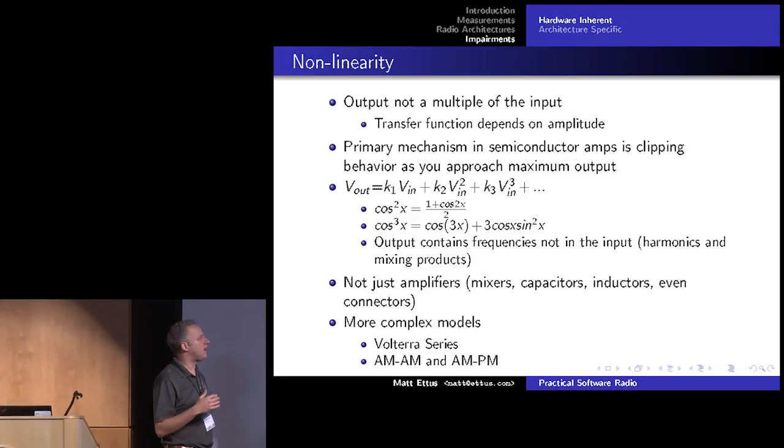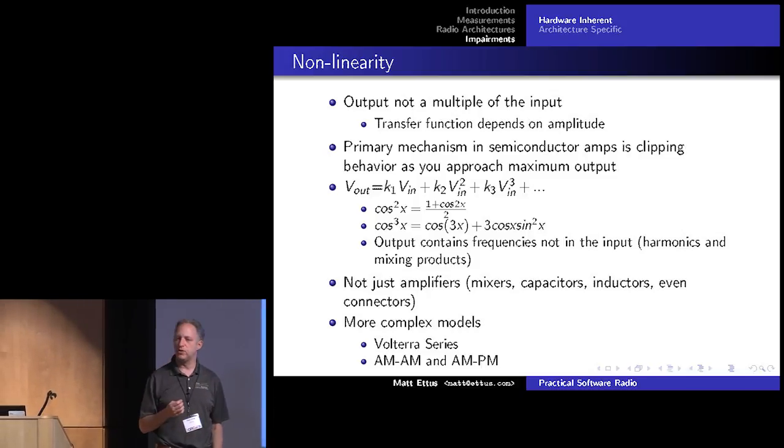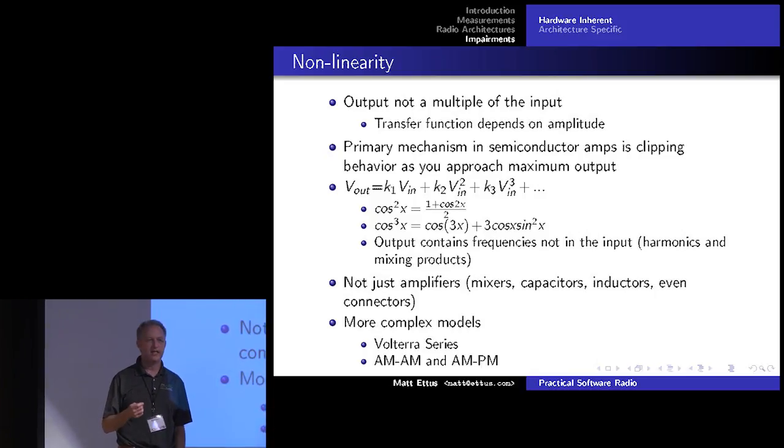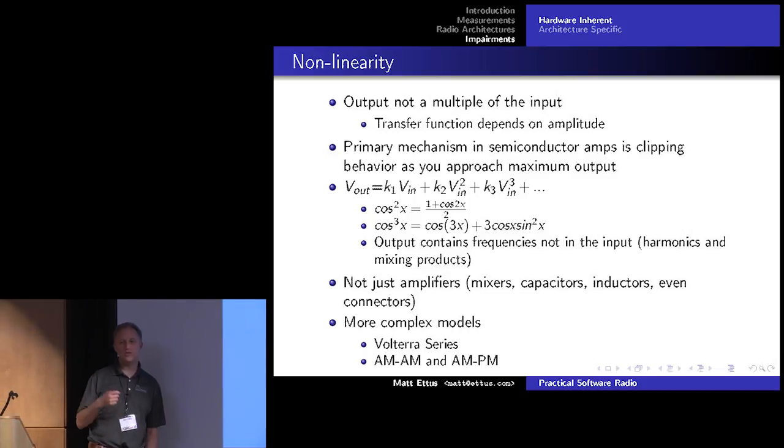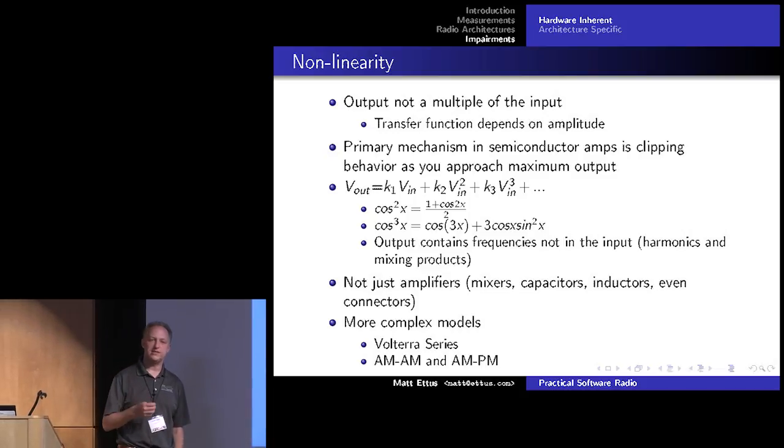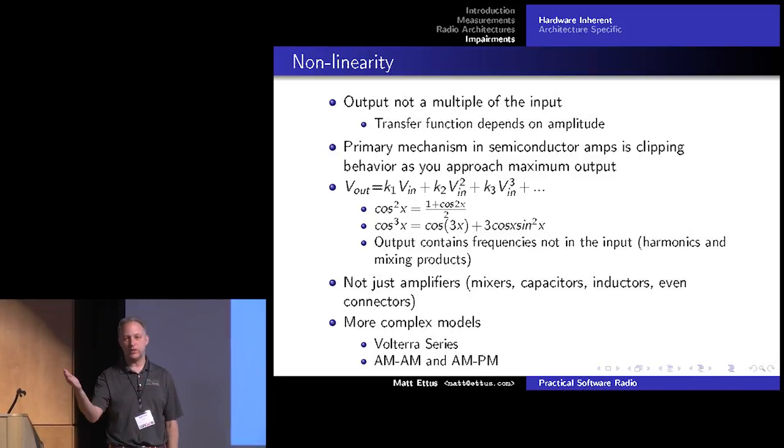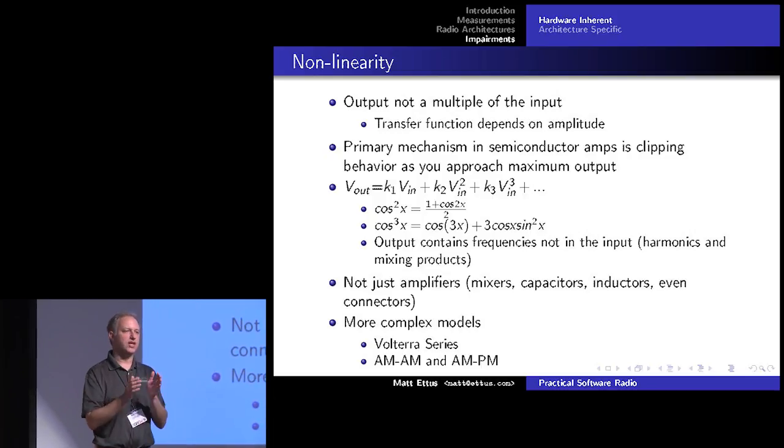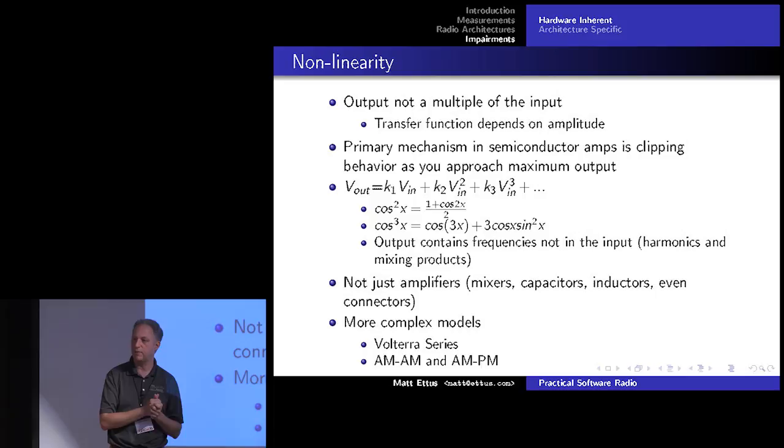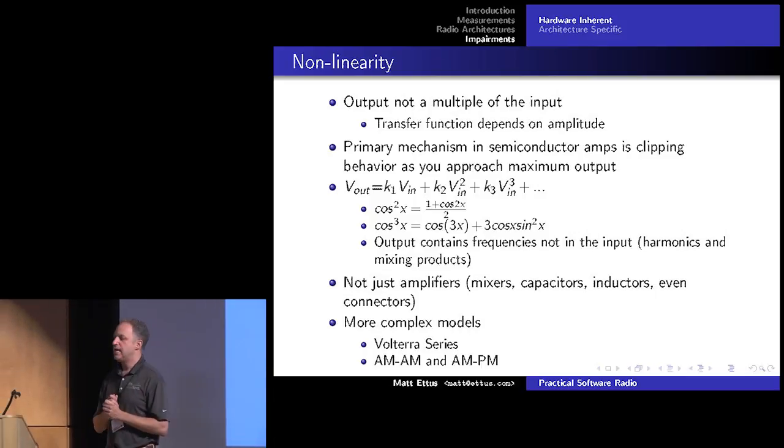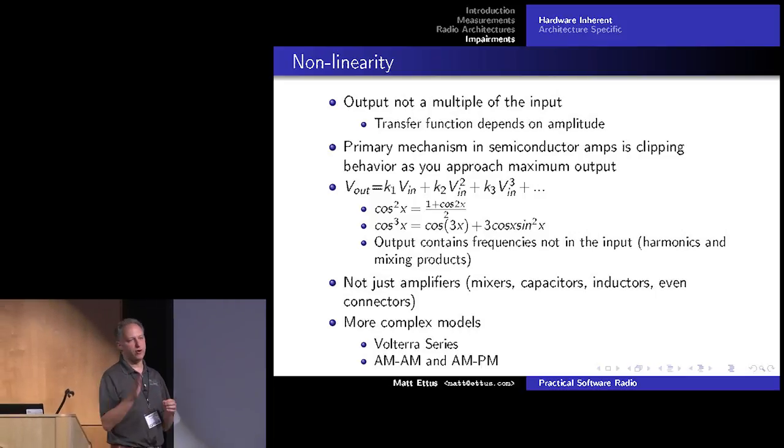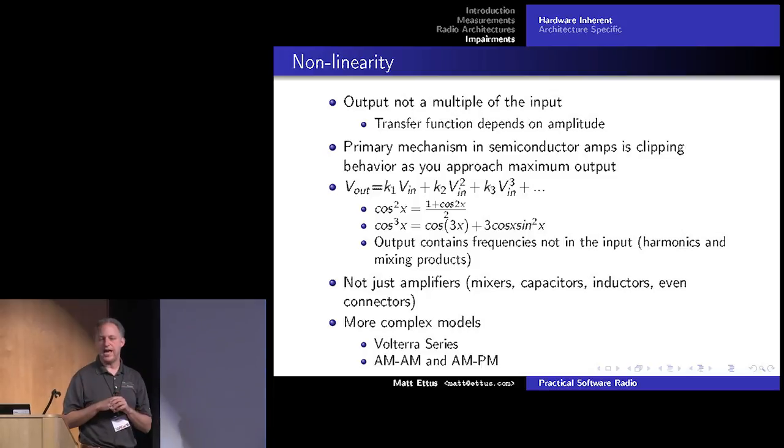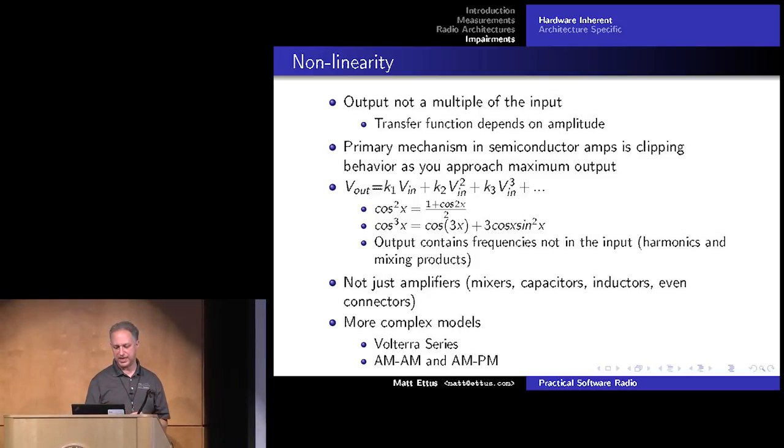The higher the order, the less dominant it is at low signal levels. So mostly we care about the third order. Now why don't we usually don't care that much about second order. So why is that? Well, so the location of the interference is determined by the order. So a second order interferer, it will occur at double frequency or close to DC. And so in many radios, that would be outside the filters. Now in a direct conversion radio, you do care about that.